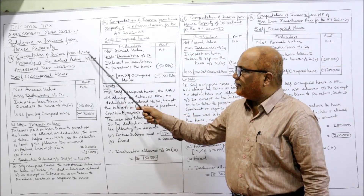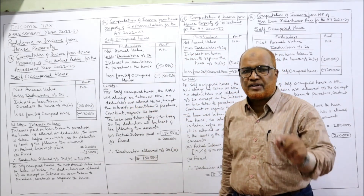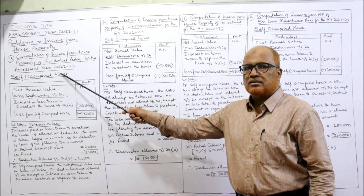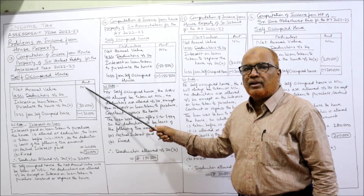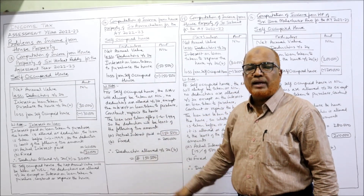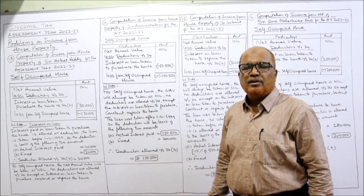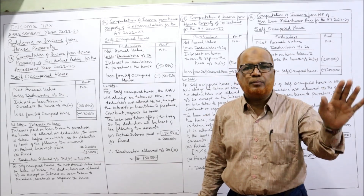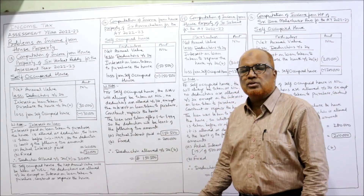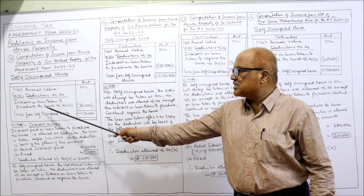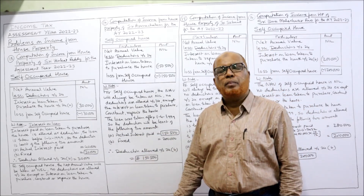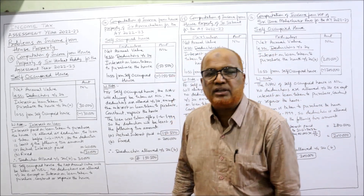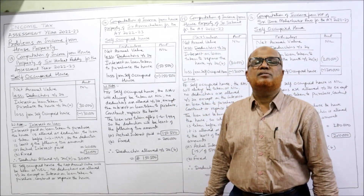Computation of income from house property of Sri Venkat Reddy for the assessment year — self-occupied house. First point: the house is self-occupied, so NAV (Net Annual Value) = nil. Deduction under Section 24: the standard deduction under Section 24A will not be allowed for a self-occupied house. Only one deduction is allowed — that is interest paid on loan taken to purchase the house. Interest paid is ₹40,000.